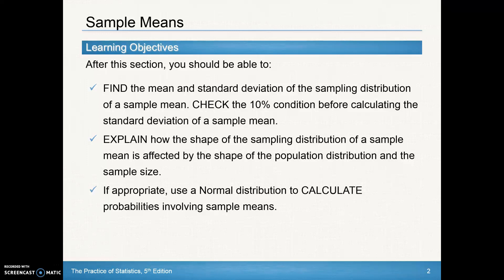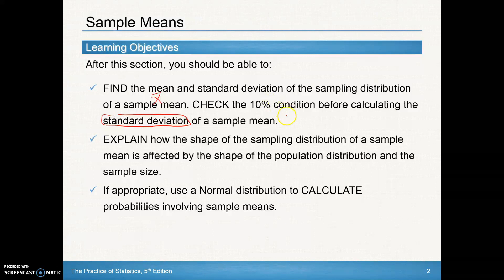After this section we should be able to find the mean and the standard deviation of the sampling distribution of a sample mean — the sampling distribution of x̄. We'll have to check the 10% condition before calculating the standard deviation of a sample mean, meaning 10 times our sample size must be less than or equal to our population, or equivalently, our sample size has to be less than or equal to one tenth of our population.